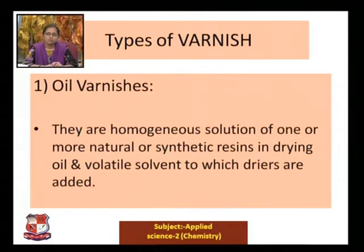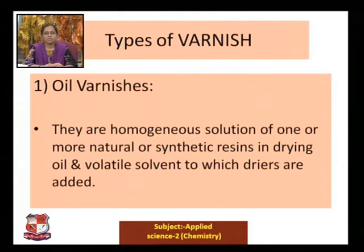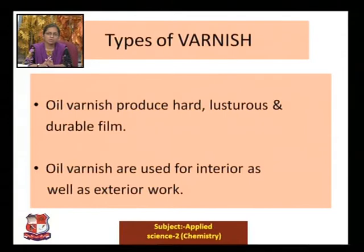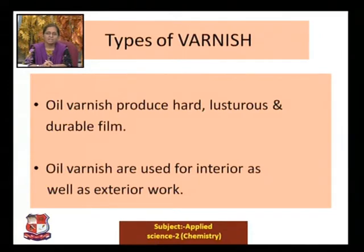The first type of varnish is oil varnish. Oil varnishes are homogeneous solutions of one or more natural or synthetic resins in drying oil and volatile solvent, to which dryers are added. Oil varnish produces a hard, lustrous, and durable film — that is a very good quality of oil varnish. Oil varnishes are used for both interior and exterior work.